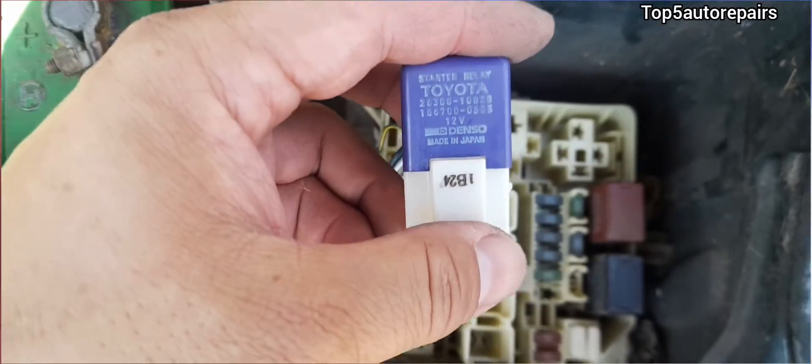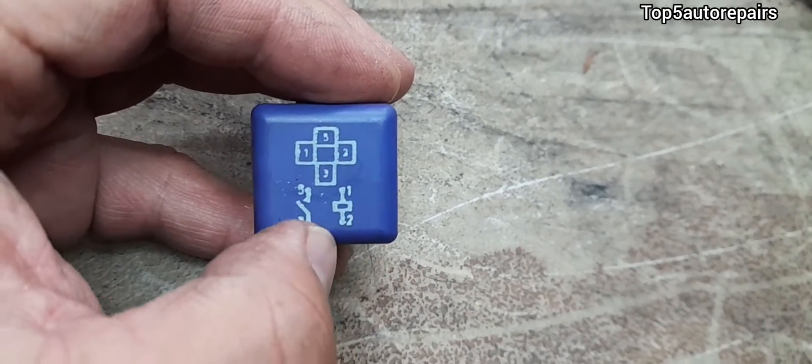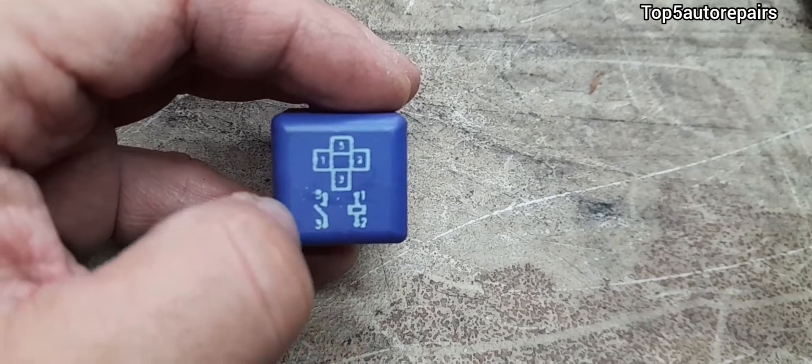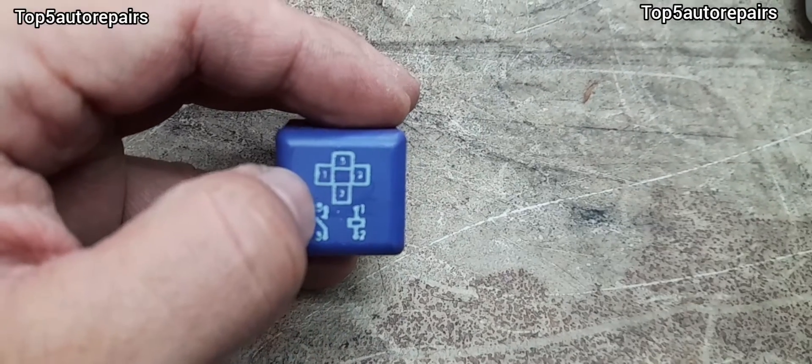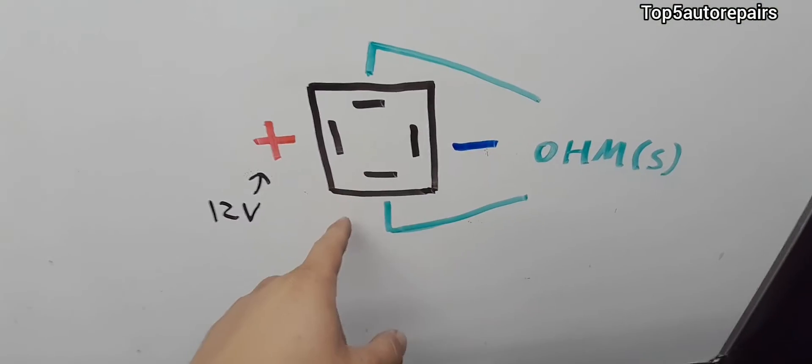This is how you read a simple starter relay diagram. Number one and two is to energize the coil, and number three and five is to complete the circuit. This is a simple drawing of a starter relay just in case your starter relay is not clearly marked.